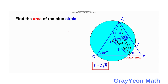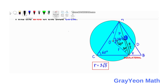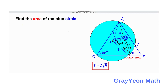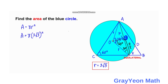For the final step, since we already have the radius of the circle, the area is simply π r². Area = π × (3√3)² = π × 9 × 3 = 27π square units. That is our answer.